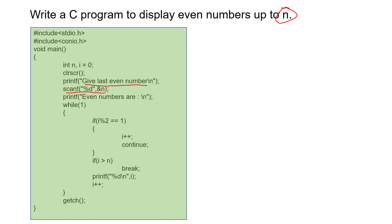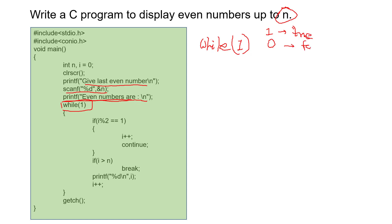The value of n is the last number of the range for even numbers. Then we are going to print the even numbers, so I am writing a message: 'even numbers are'. After it, I am using a while loop. We are writing while(1) — in any computer language, 1 means true and 0 means false. So here we are using 1, which means it will always be true. The statements written inside the while loop will execute again and again, so it may be an infinite loop. To stop our program we have to use break inside this loop.